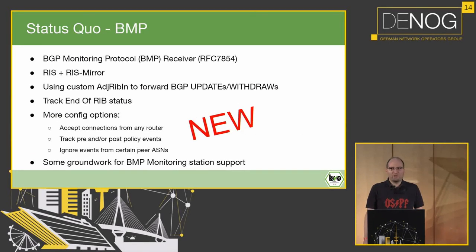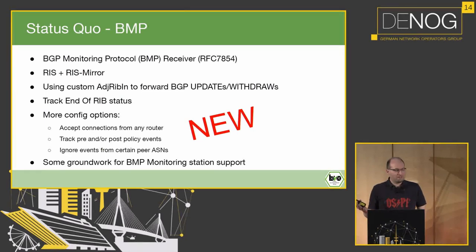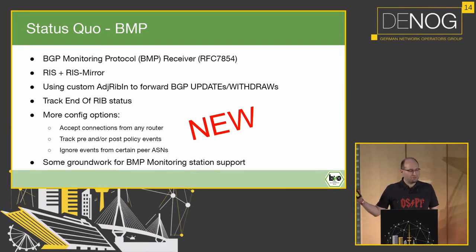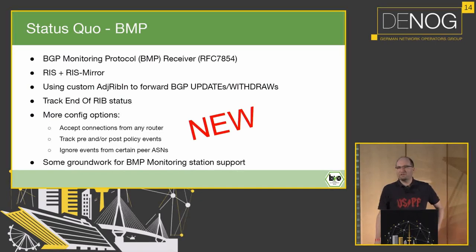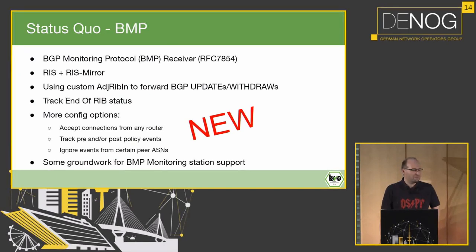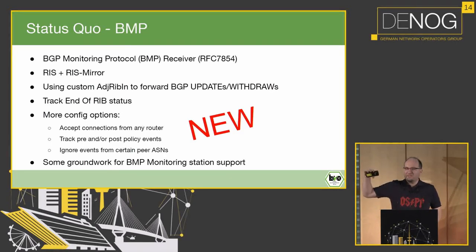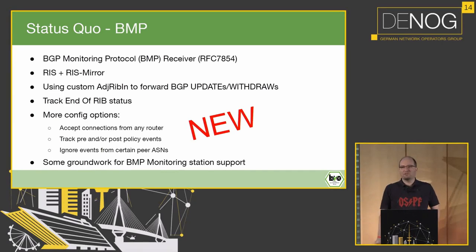Speaking of BMP, for a while we have had the BMP receiver, so you can configure your routers to send BMP feeds to bio, which can then build the full view of your routing table and serve as a RIS — a route information server — which can mirror it to other RISs. This is used in some setups to see how the global routing table of your network looks. We can do LPM matches against that, which is very useful for SDN controllers. With the pluggable adjacency RIB-in, this can also be used to send updates and withdraws elsewhere. And recently we added the option to follow the end-of-RIB marker in BGP, so when you set up a BGP session, all updates come in, and then an empty message comes in saying this is the end of my RIB — everything following are really live updates.